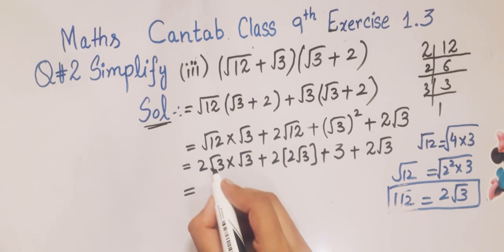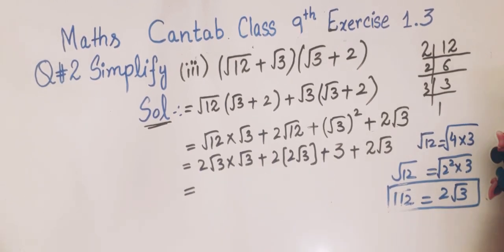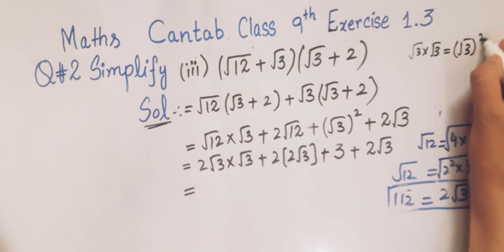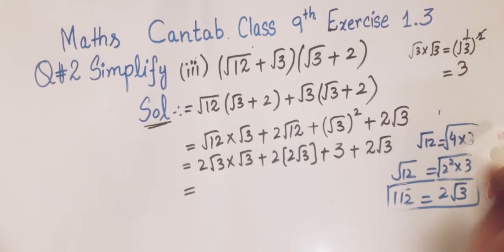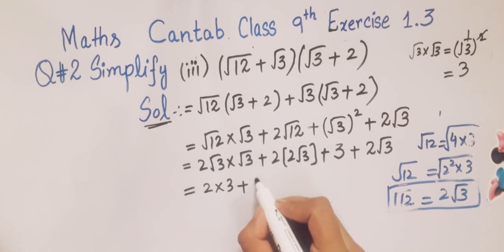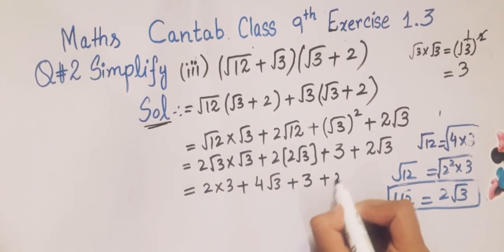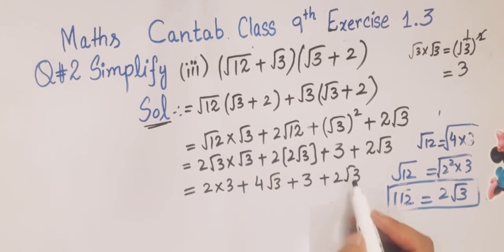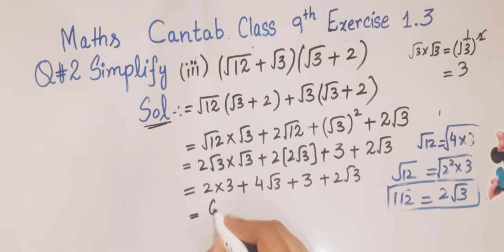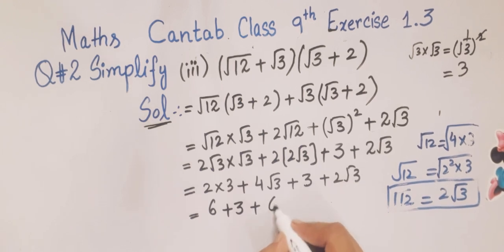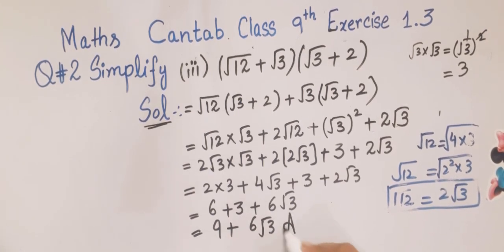Now √3 × √3 = (√3)², and this square cancels the square root, giving 3. So we get 2 × 3 + 2 × 2√3 = 6 + 4√3, then plus 3 + 2√3. We add like terms: 4√3 + 2√3 = 6√3, and 6 + 3 = 9. So the answer is 9 + 6√3. I hope you understand all the steps.